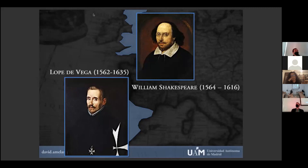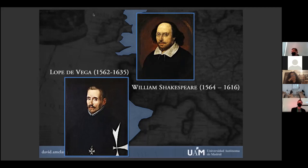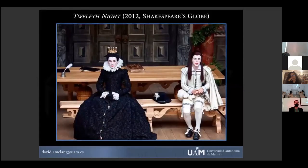La forma en la que escriben es muy parecida: ahí está Romeo y Julieta de Shakespeare y los Castellines y Monteses de Lope de Vega, dos versiones de la misma historia. Escriben para edificios muy parecidos, para públicos composicionalmente y socialmente muy similares. La diferencia más importante entre el teatro de uno y otro es que, mientras en España había actrices profesionales, en Inglaterra todos los roles femeninos eran interpretados por hombres, en realidad niños de entre 8 y 20 años que se travestían de mujer, ya que estaba prohibido, al menos en los teatros más importantes, que las mujeres actuasen de forma profesional.